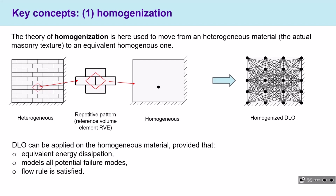The first key concept is homogenization. In order to apply the theory of homogenization, we need to define a homogeneous material equivalent to the heterogeneous masonry texture composed of rigid blocks. The idea is to apply DLO to the homogeneous material — this is called homogenized DLO. To apply it, we need to evaluate the equivalent energy dissipation between the heterogeneous and homogeneous models. The homogenized DLO must represent all potential failure modes, and the flow rule must be satisfied along all discontinuities.